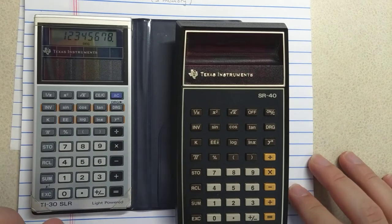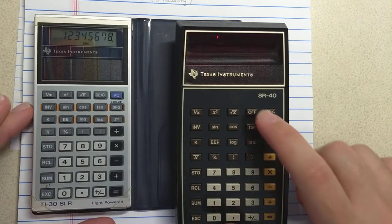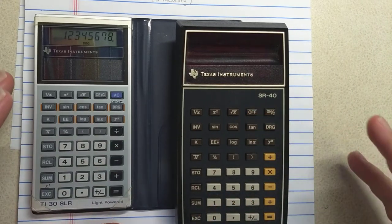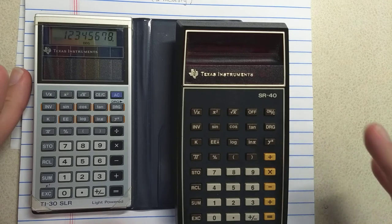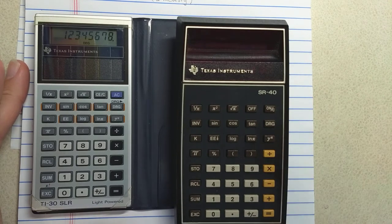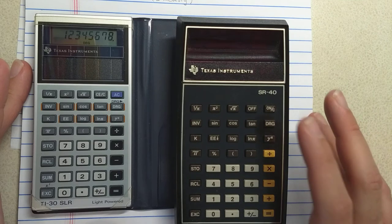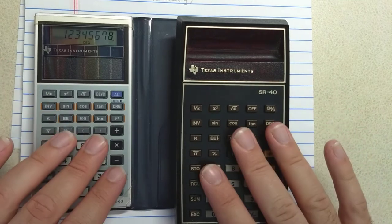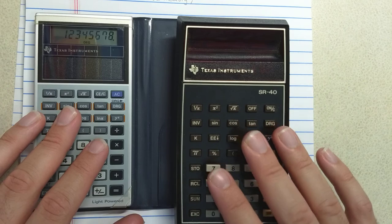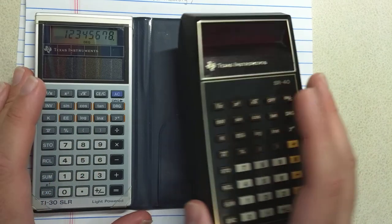So what makes the TI-30 feature set kind of a knocking the ball out of the park moment for TI? Well, first we already mentioned it's cheap, cheap enough to buy instead of a slide rule. It's portable.